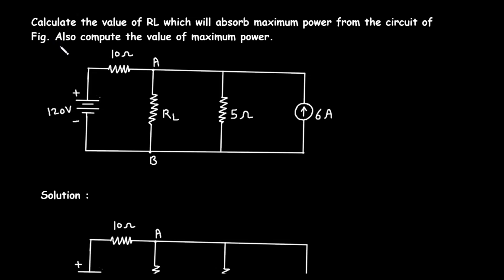Hello and welcome. In this video, we will walk through a detailed solution to a circuit analysis problem. The goal is to calculate the value of a load resistor, which we'll call RL, that will absorb the maximum possible power from the circuit. We will also compute the value of this maximum power. This problem is a classic application of the maximum power transfer theorem, which involves finding the Thevenin equivalent of the circuit.